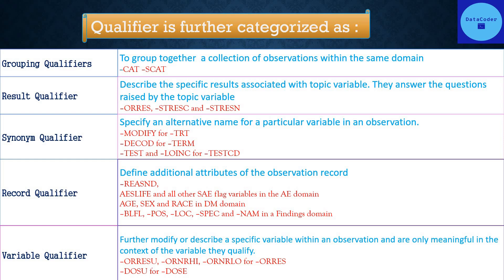Variable qualifiers further modify or describe a specific variable within an observation and are only meaningful in the context of the variable they qualify. For example, for the original result LBORRES, the variable qualifiers are result unit LBORRESU, and normal range LBORNRHI and LBORNRLO. For dose, the variable qualifier would be dose unit, like CMDOSU.